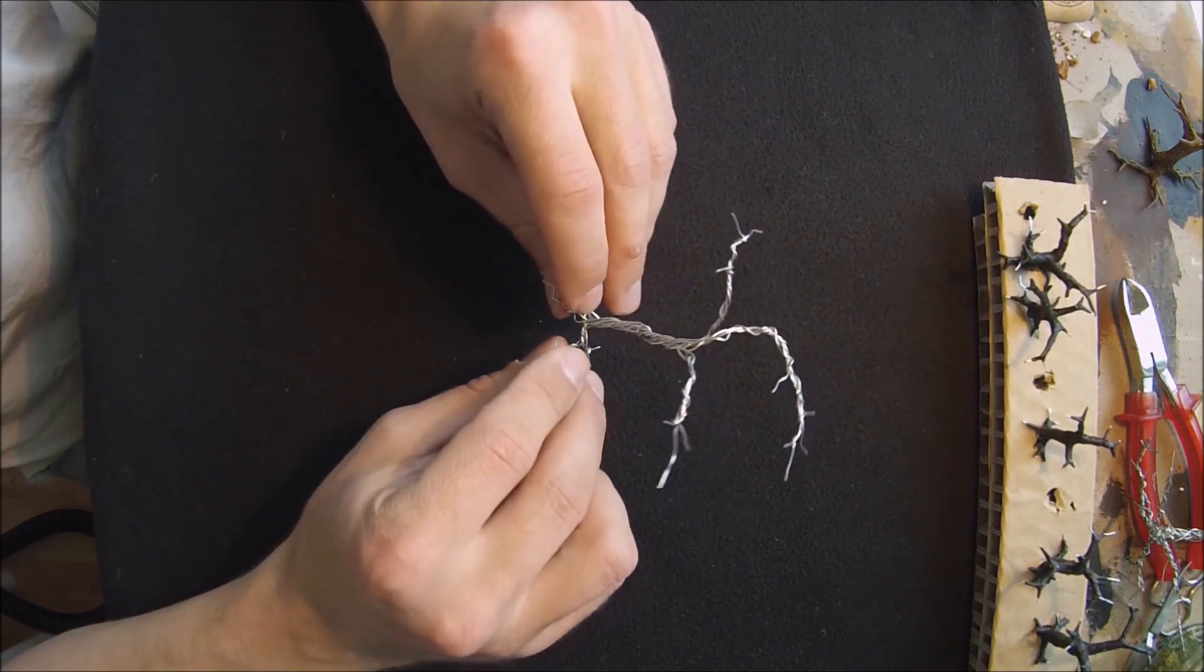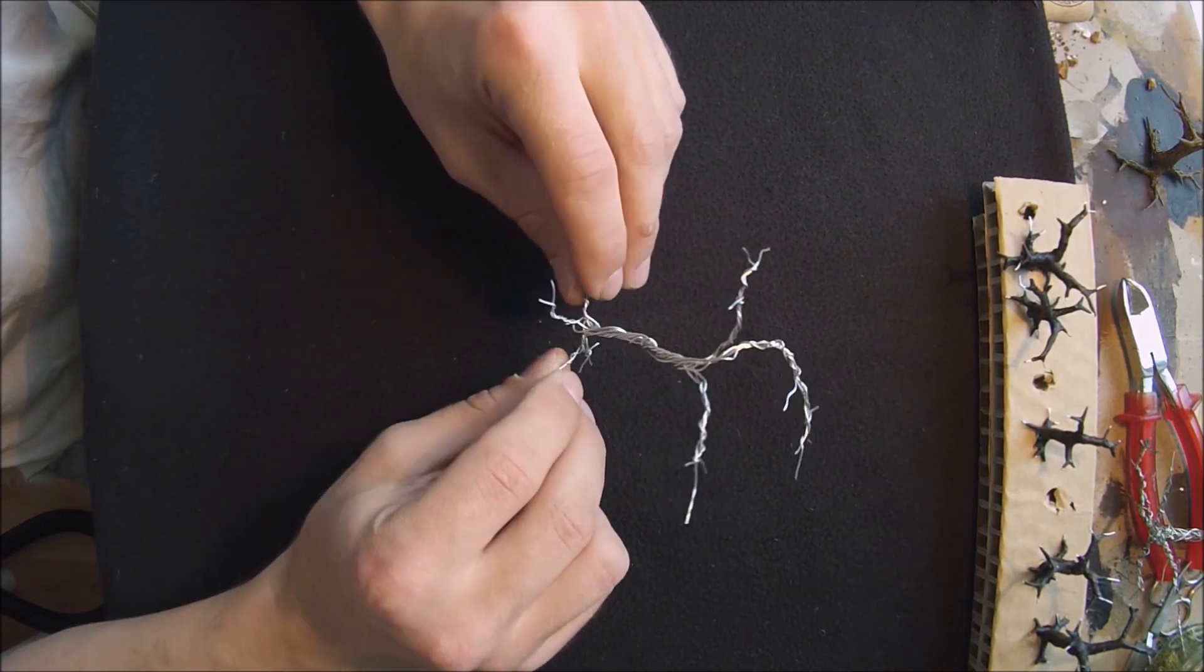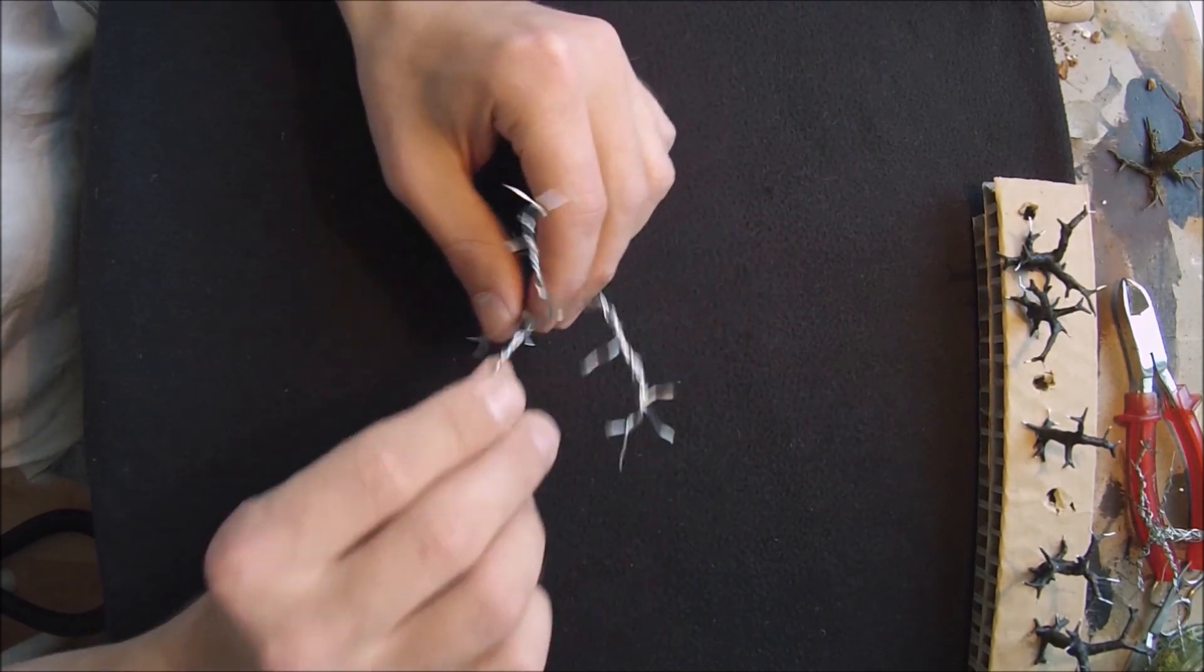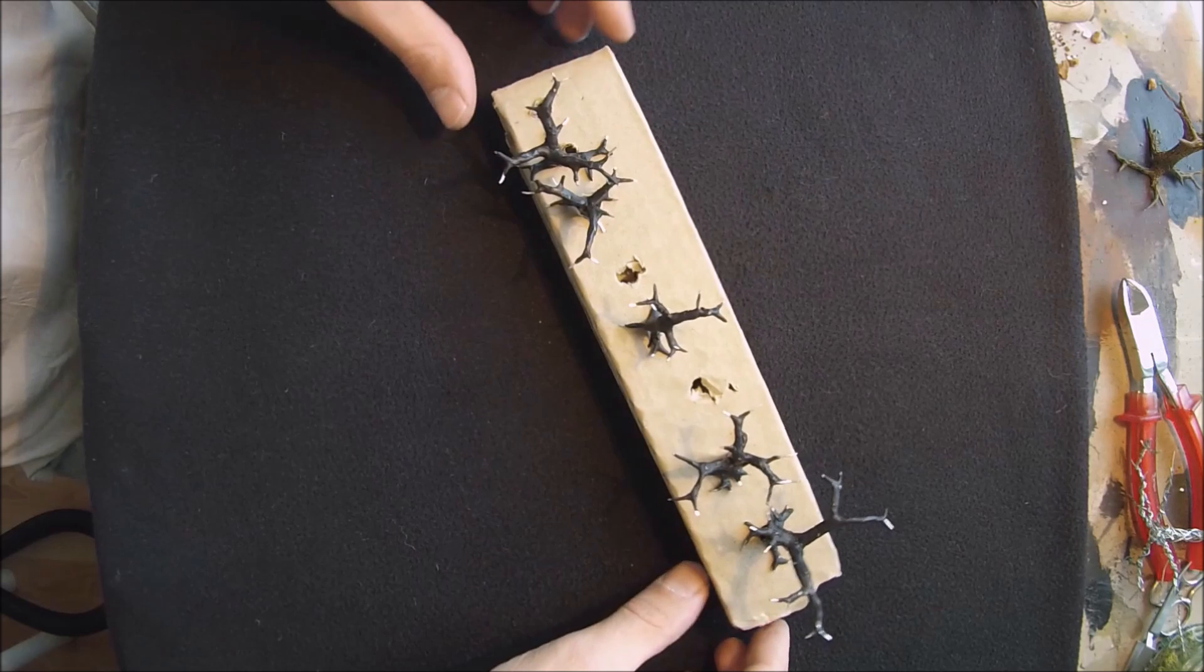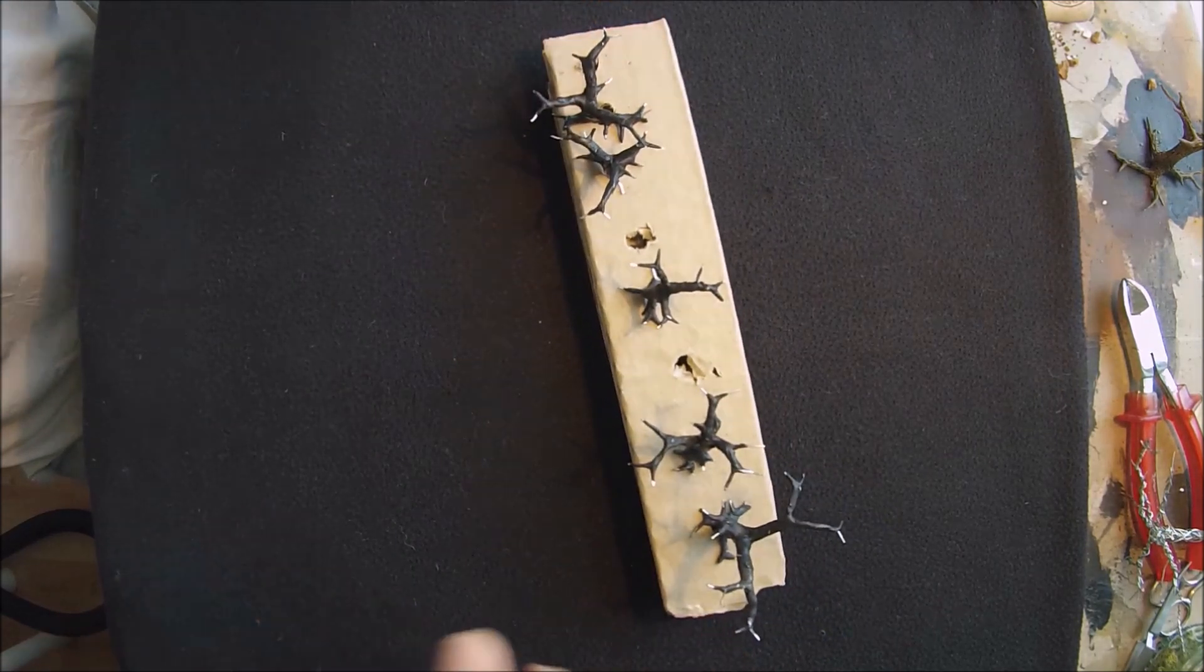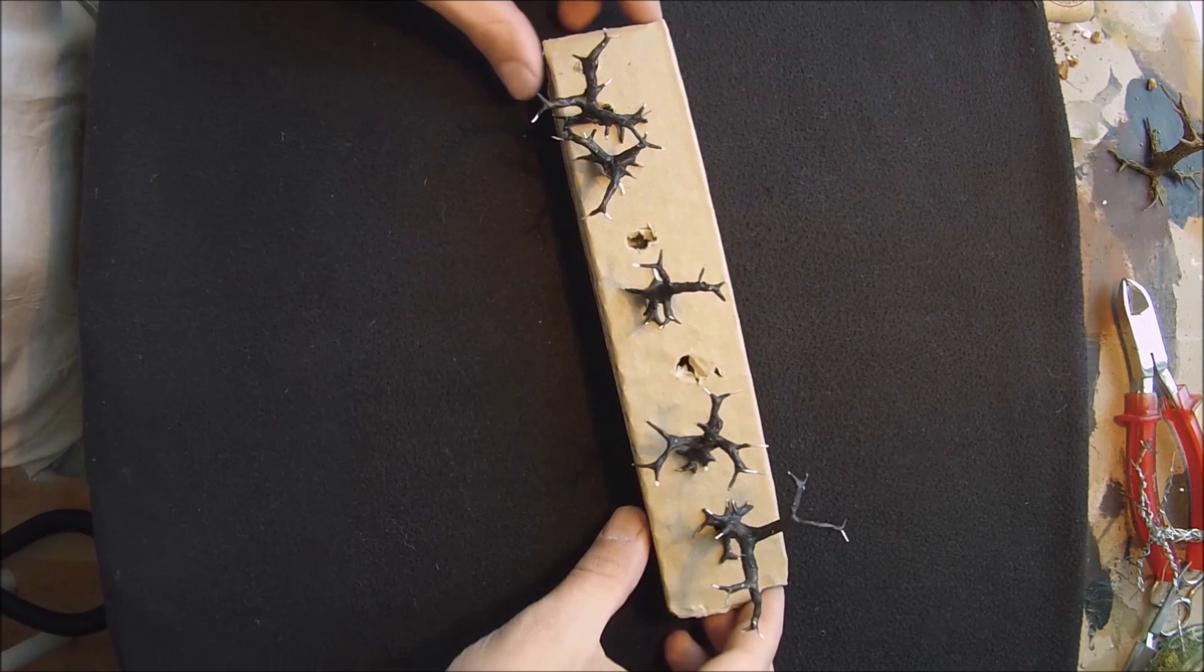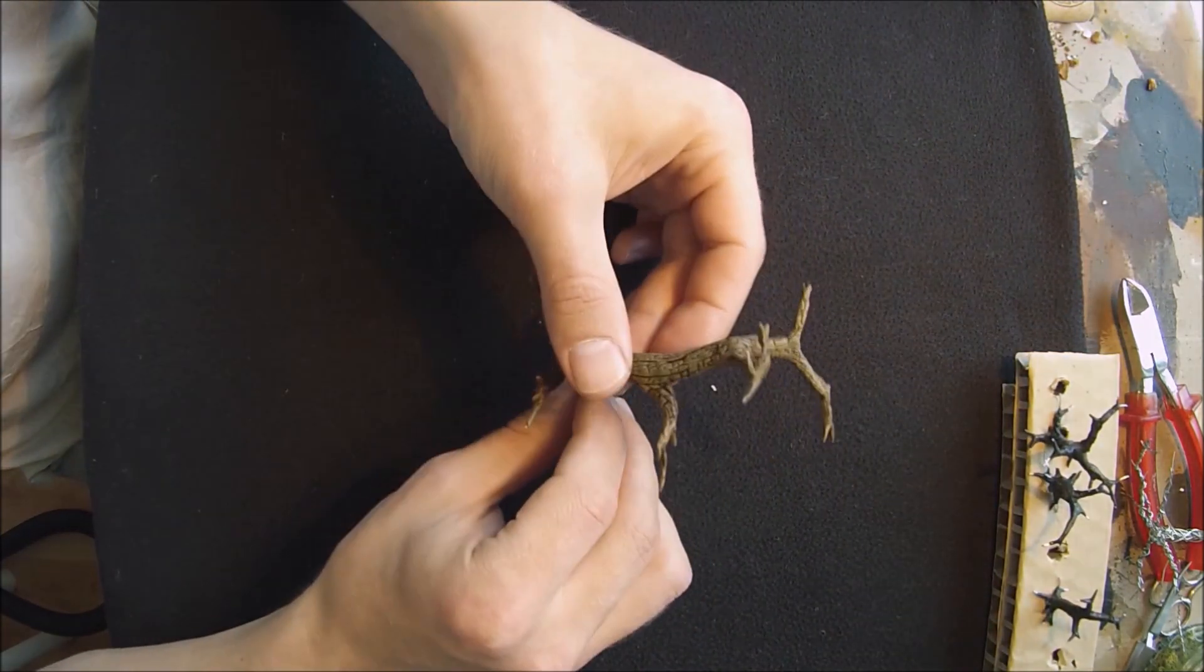Here you can see that I start to build my trees by using wire. Then I go over with green stuff to fix the wire. Afterwards I work with thermoreactive plastic like FIMO, which was sold in Germany.